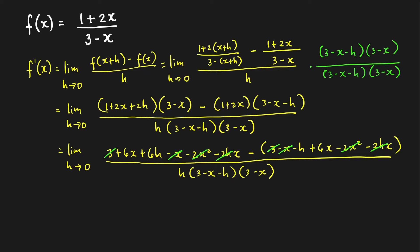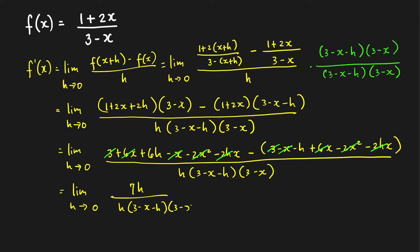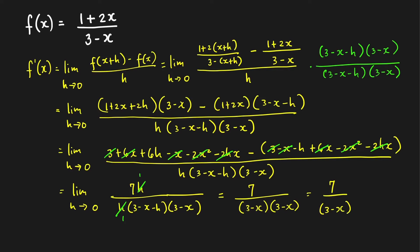So the numerator simplifies — 3 minus 3 cancels, the x terms and 2x squared terms cancel, and the 6x terms cancel — leaving us with 7h. So this becomes limit as h approaches 0 of 7h over h times 3 minus x minus h times 3 minus x. We cancel h since h approaches 0 but is not equal to 0. As h goes to 0, the limit is 7 over 3 minus x times 3 minus x, which simplifies to 7 over (3 minus x) squared. This is the derivative.